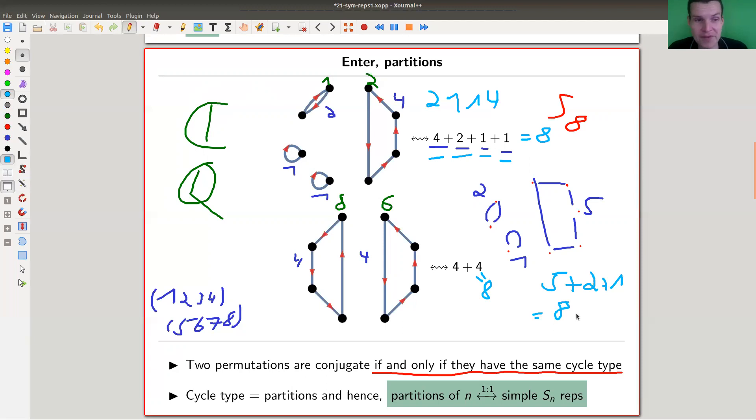So in other words, partitions of eight, in one-to-one correspondence with cycle types for S_8, in one-to-one correspondence with conjugacy classes for S_8, in one-to-one correspondence with simple modules for S_8.